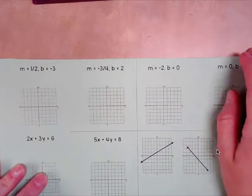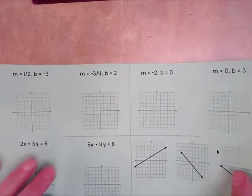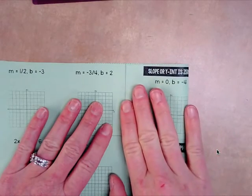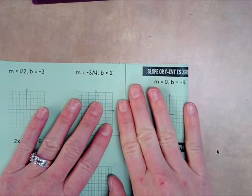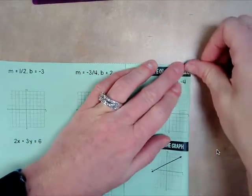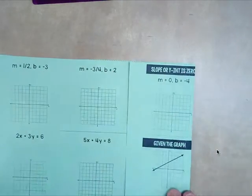You should have cut off the top part that says 'cut here,' and then you're going to fold these like a window to the middle line.